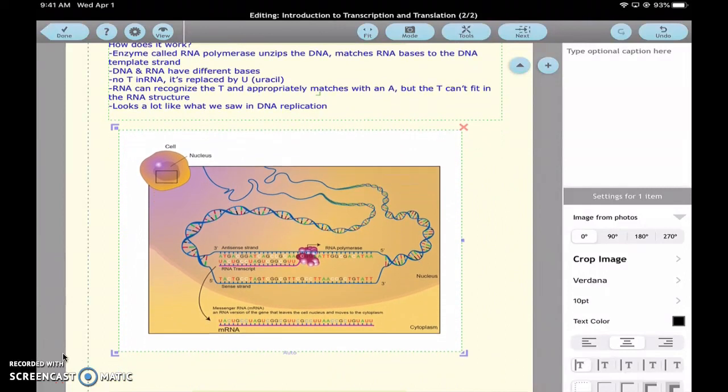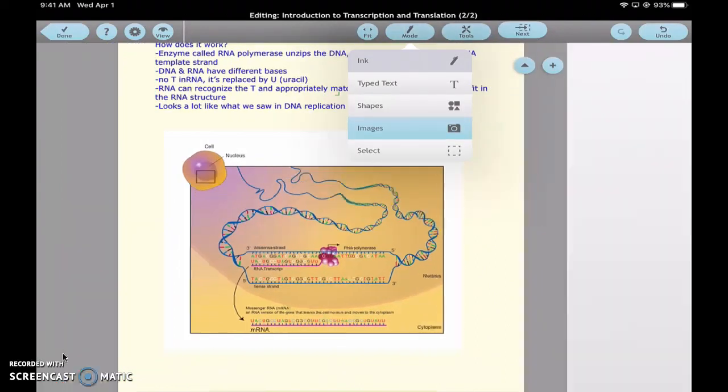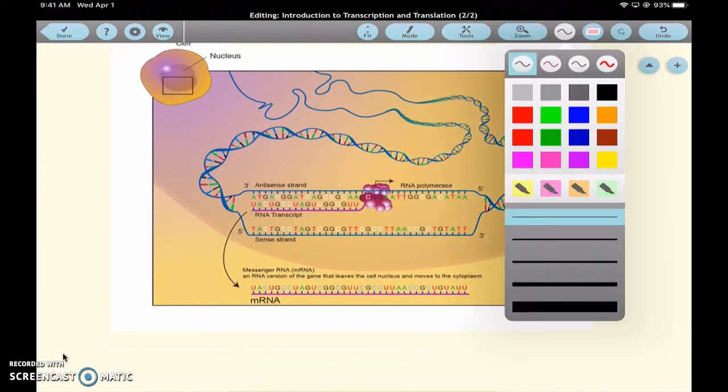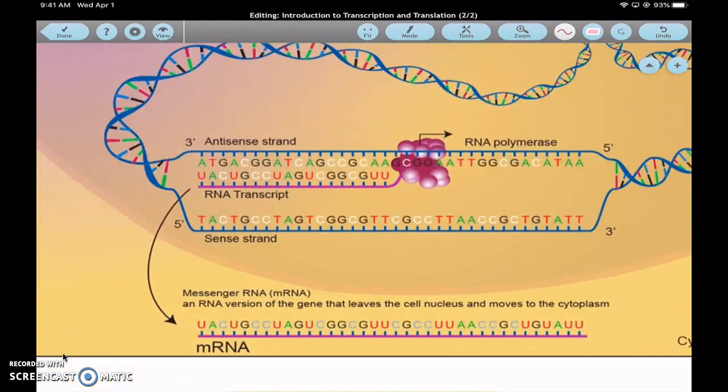So you can see down here at the bottom, this is DNA, this is your RNA, and then the RNA polymerase, this purple ball-looking thing, is moving in this direction.